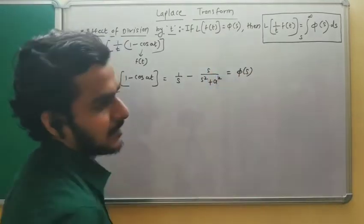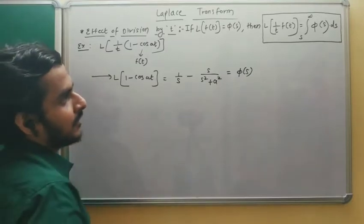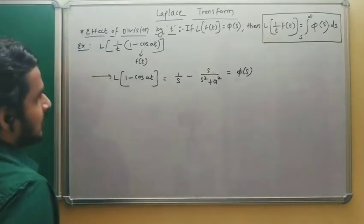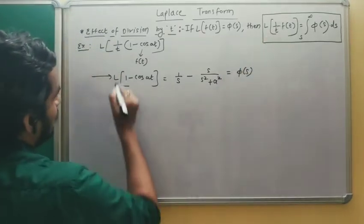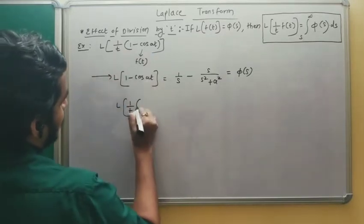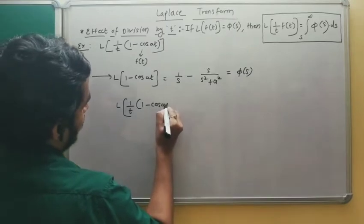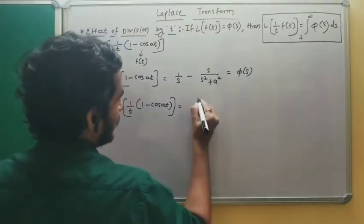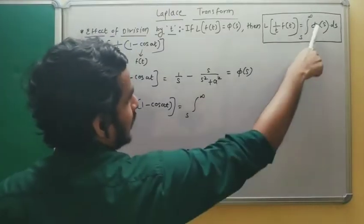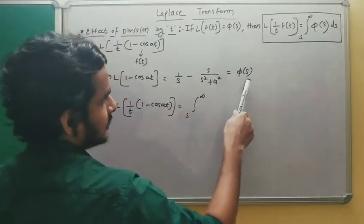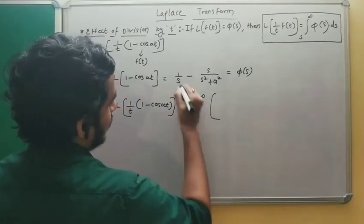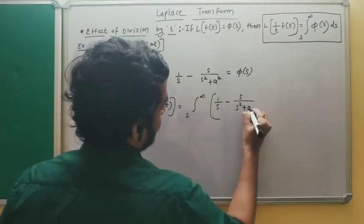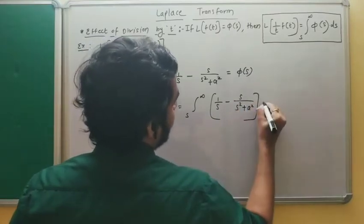The next step is to apply the formula for division by t: L{(1/t)·f(t)} = L{(1 − cos(at))/t} equals integration from s to ∞ of φ(s) ds. So we write the integral from s to ∞ of [1/s − s/(s² + a²)] with respect to s.